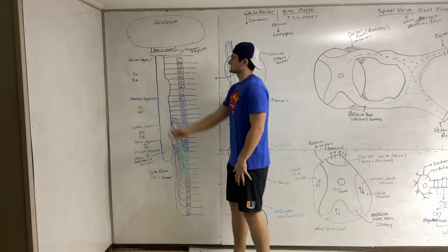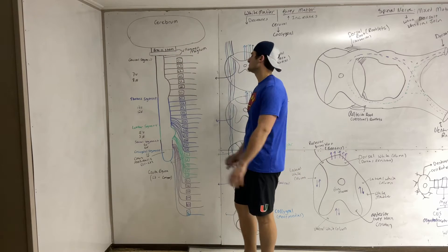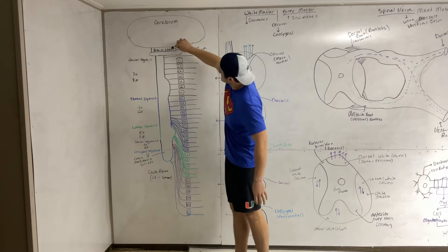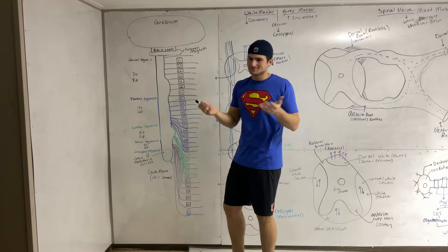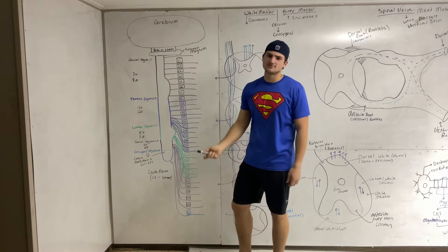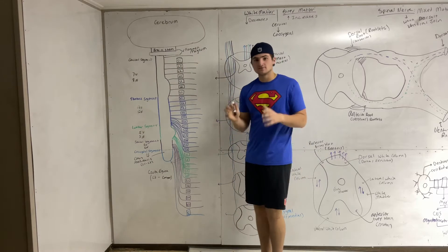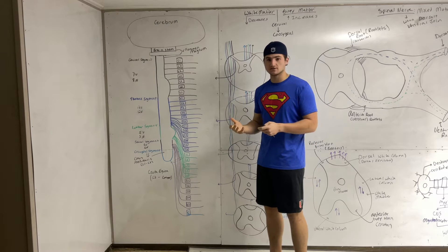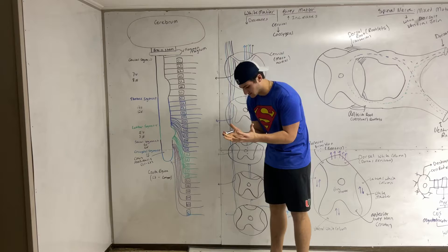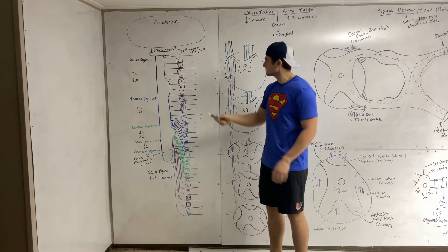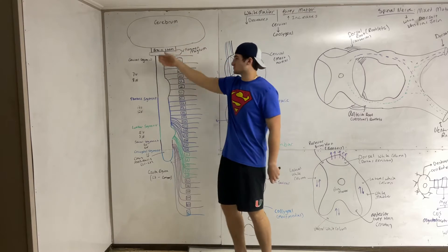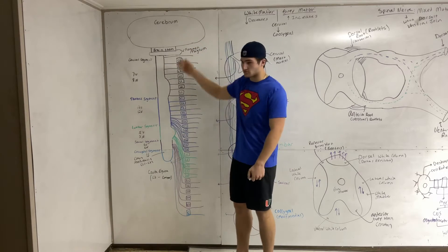We're starting with this structure right here — this is the cerebrum, the top of the brain, and I have the brain stem right here. This hole right here is the foramen magnum. Remember when we did the structure of the skull and the different foramens? The foramen magnum was the biggest hole — that's where the brain stem goes through.